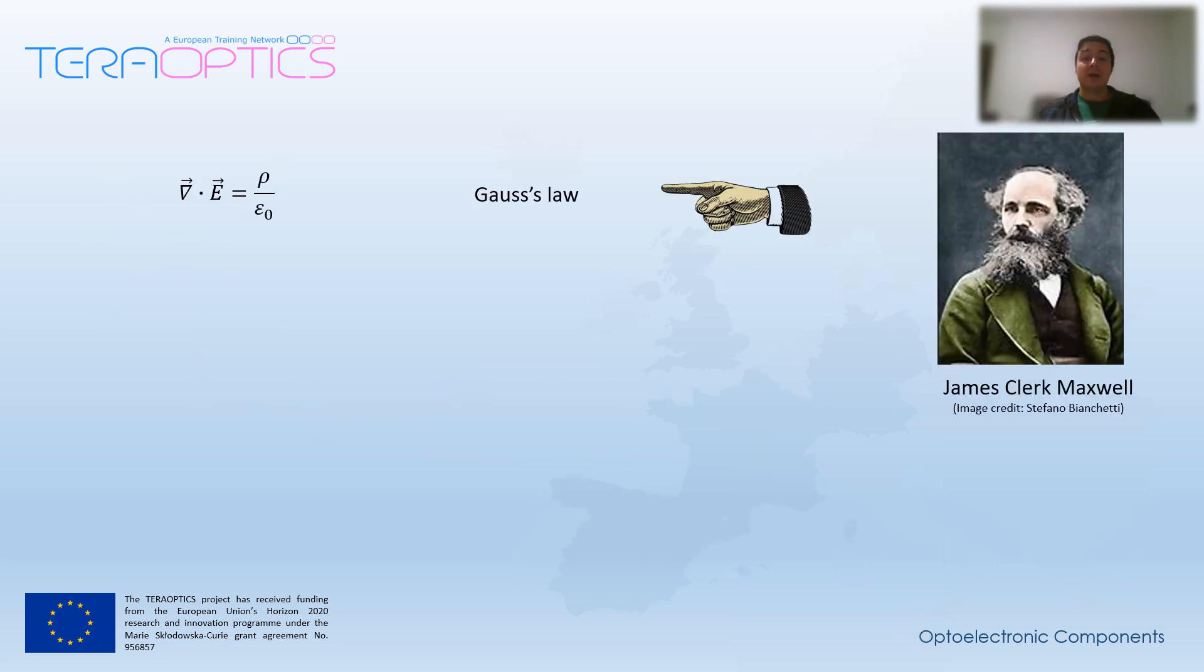We will start with Gauss law, which tells us that when electric charges are positive, the electric field tends to flow out of the charge, but when negative charge is present, the field tends to flow toward the charge. However, Gauss law for magnetism says that the total magnetic flux through a Gaussian surface is zero, which means that magnetic monopoles don't exist in space.